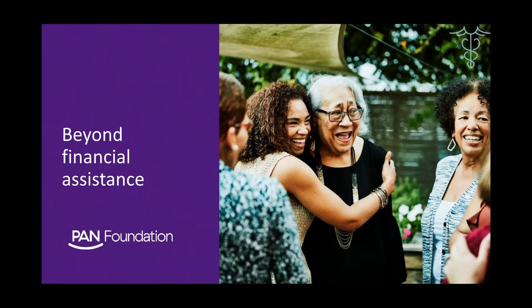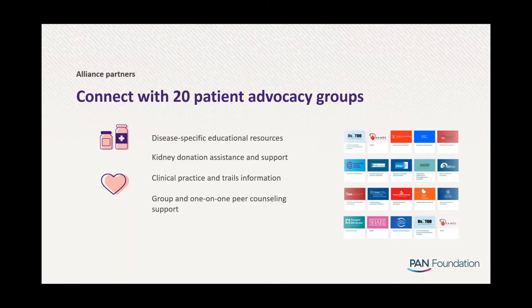We understand that managing an illness is difficult, and patients who apply for assistance with PAN may need additional support. They may have questions about their disease and treatment, side effects, and medication adherence, or benefit from connecting with a compassionate community. That is why we have formed alliances with leading patient advocacy groups, such as the American Lung Association and the National Kidney Foundation, to provide patients with the holistic support they need. When a patient or caregiver applies to PAN, they are given an option to opt in to receiving communications from the respective alliance partner, who will then reach out directly.